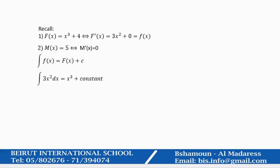To recall the derivative, suppose we have F of X, big F of X, equal X cubed plus 4. The derivative will be 3X squared plus 0. Another example: M of X equals 5, the derivative will be 0.